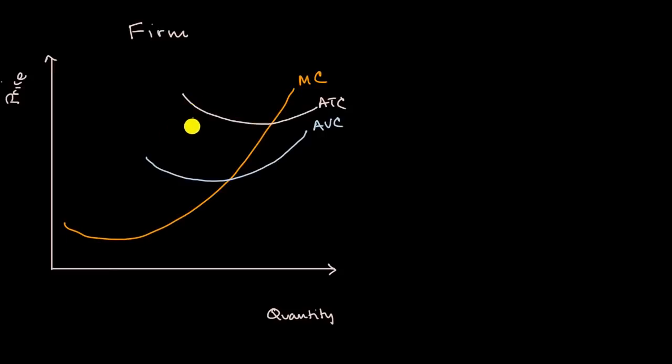And of course the difference between, for any given quantity, between the average total cost and the average variable cost, that is the average fixed cost.